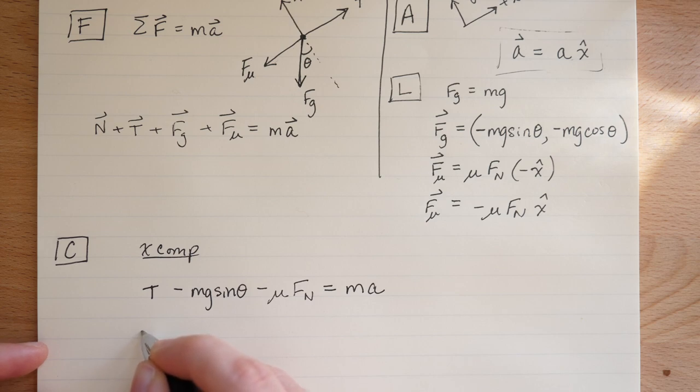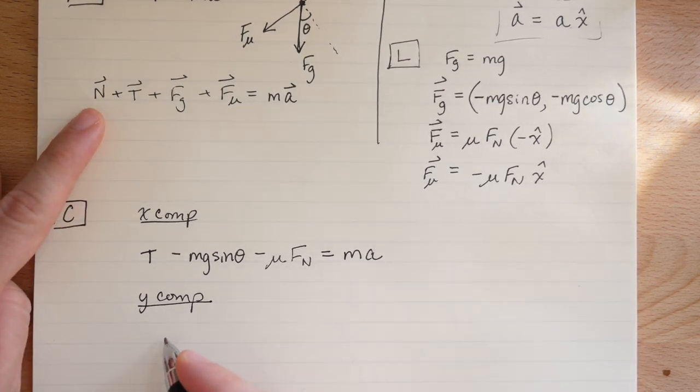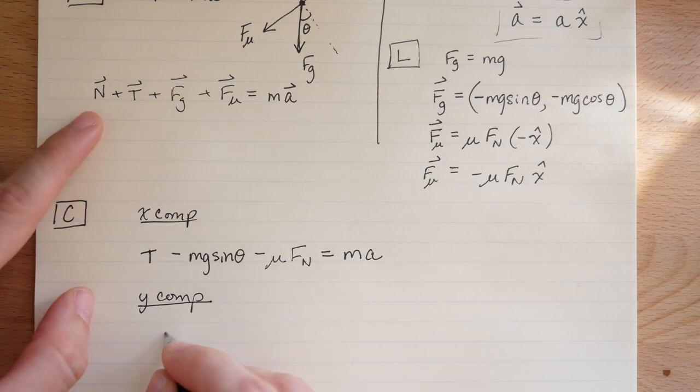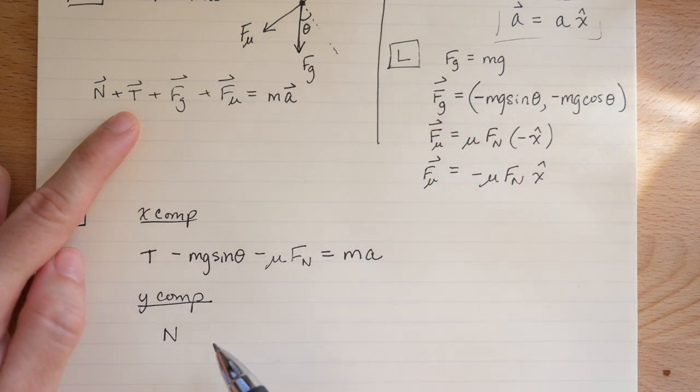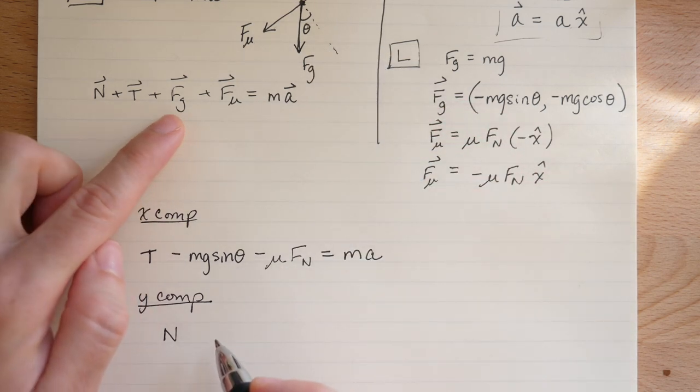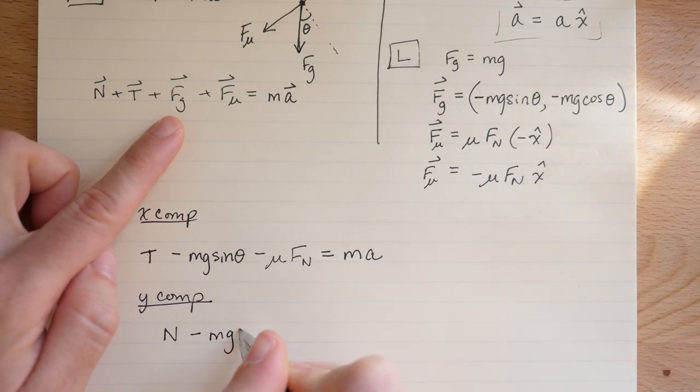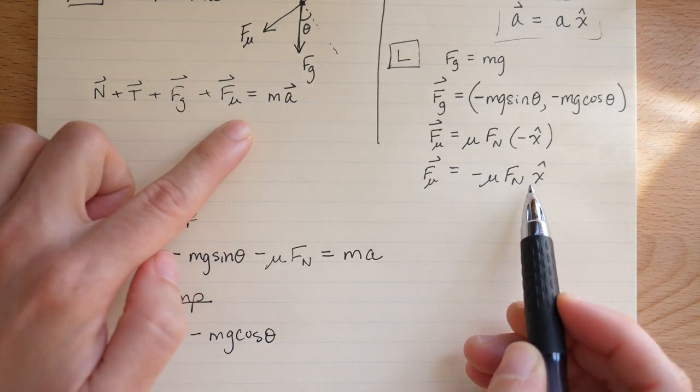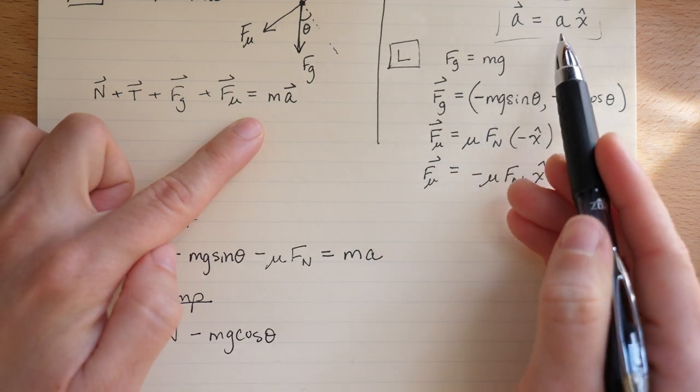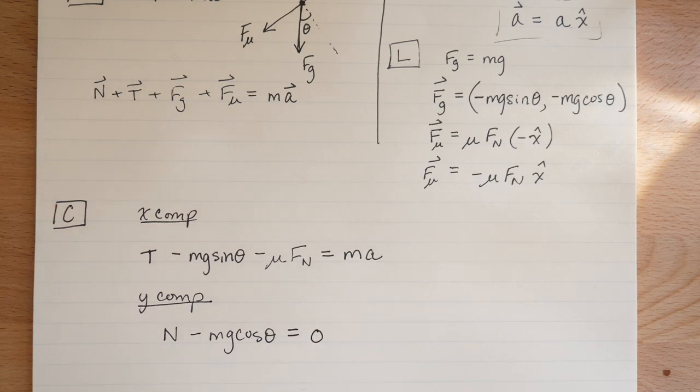Now we'll write down the Y component. So again, we look at this equation and we start writing down the Y components. So N is totally in the Y direction and it's in the positive Y direction, so we just write N. T has no component in Y. Fg does have a component in Y. We just look back over here and pick it off. So it's minus Mg cosine theta. And mu was only in the X direction, so no component here. And A was fully in the X direction, so this is just equal to zero.